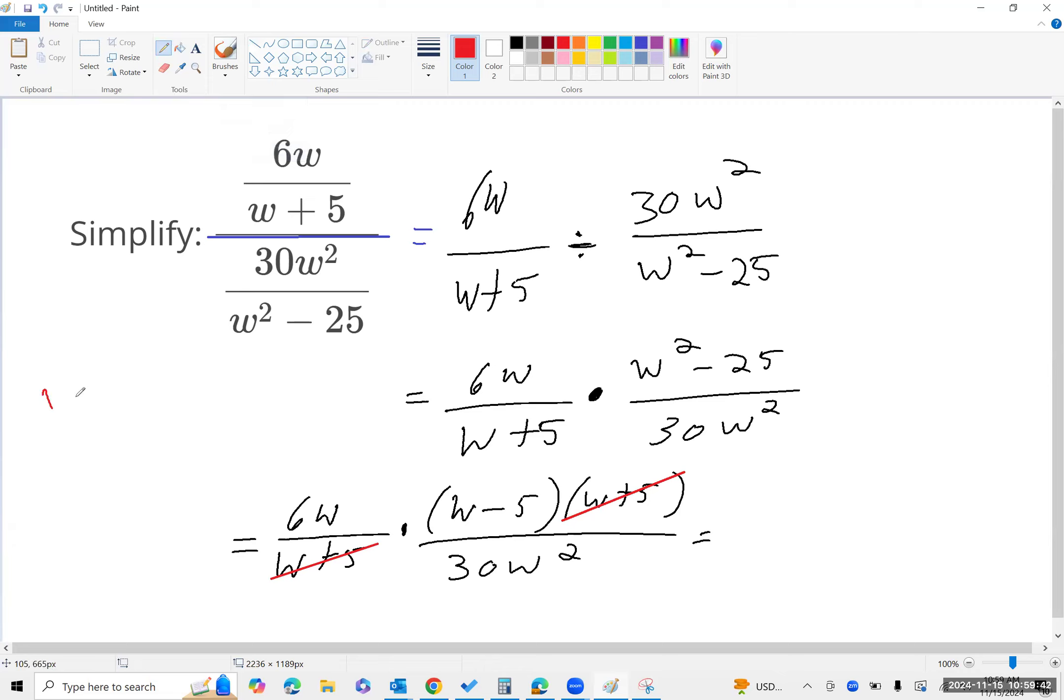If you notice the w in the numerator and the w squared in the denominator, if I expand that out, you'll see that those w's cancel, so you're left with one w in the denominator.